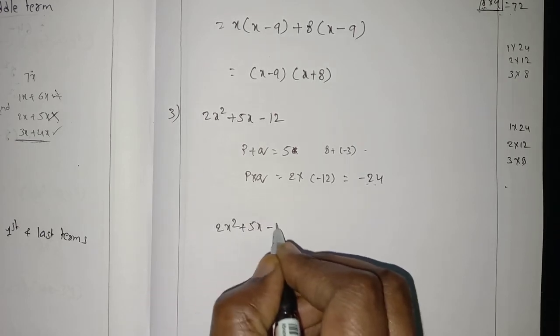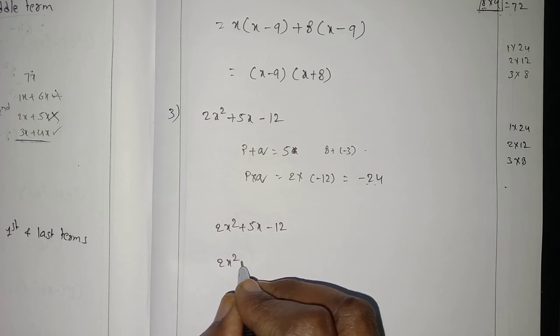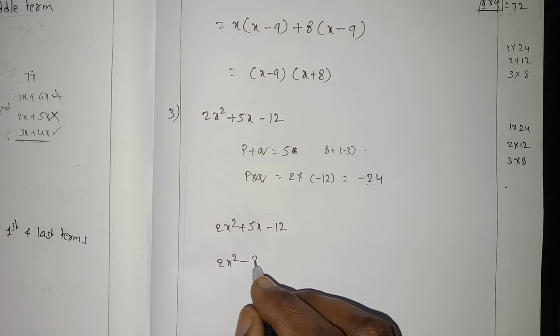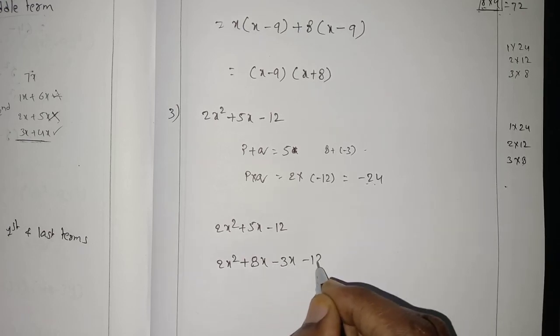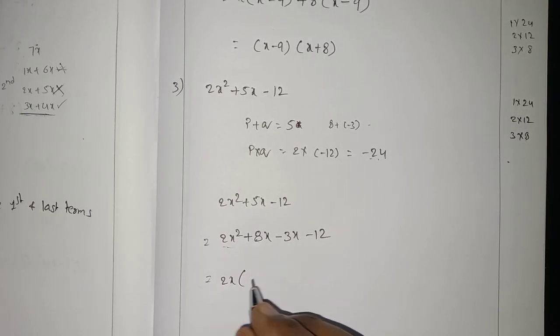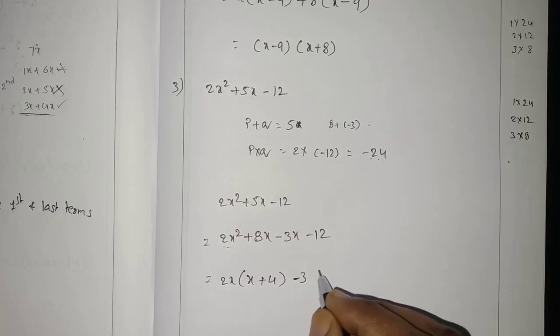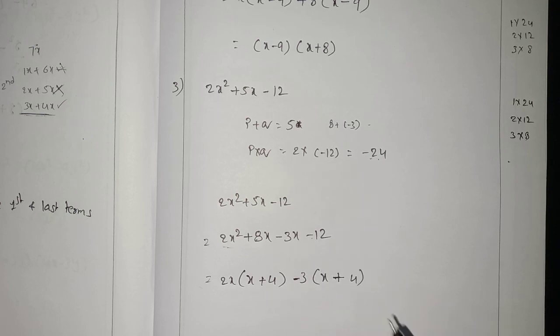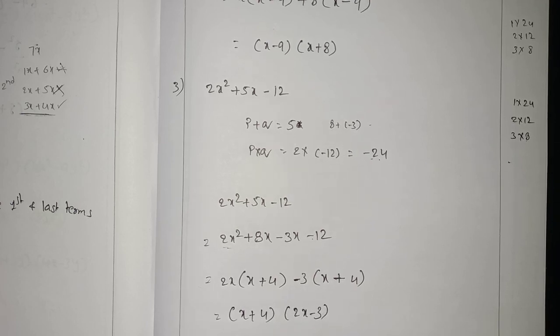2x squared plus 5x minus 12. So 2x squared, write 8x first, 8x minus 3x minus 12. Now, I am going to take 2x common for these two. What is remaining? x plus 4. 2x into x is 2x squared, 2x into 4 is 8x. Now, I am going to take minus 3 as a common. x plus 4, because minus into plus is minus. 3 times 4 is 12. Now, x plus 4 is common. What is remaining? 2x minus 3.